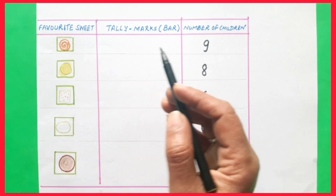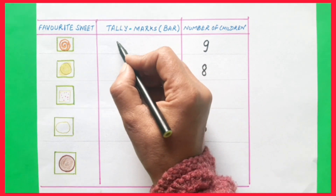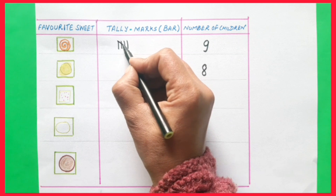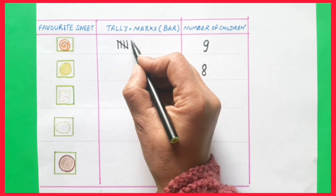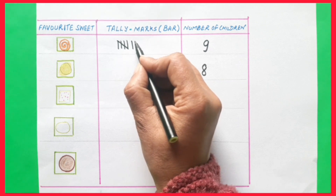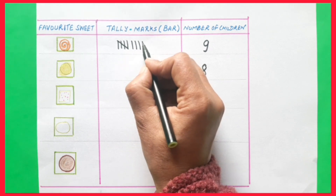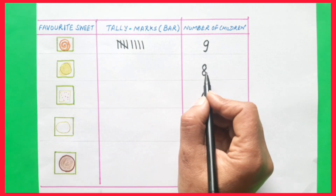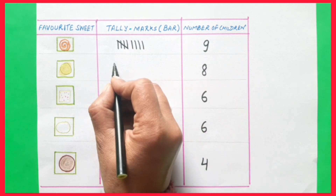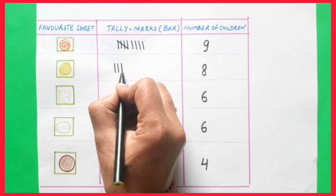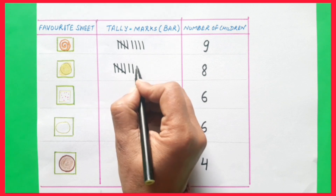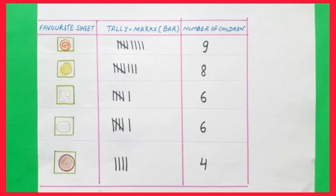Now, the children liking jalebi are nine. So I will show you how to write tally marks: one, two, three, four, and one line diagonally — that makes five — then six, seven, eight, nine. In this way, for laddu, which is liked by eight children, the tally marks are: one, two, three, four, five, six, seven, eight. In this way, we will write all the tally marks.